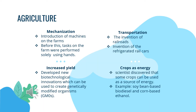In the agriculture area, it helps through mechanisation, transportation, increase of yield, and crop as energy. For mechanisation, one of the first innovations that had a great impact on the sector was the introduction of machines on the farms. Before this innovation, tasks on the farm were performed solely using hands. Mechanisation was a major change that helped the agriculture sector.